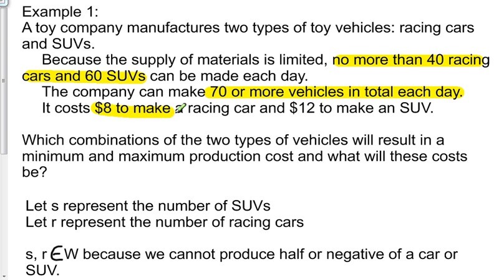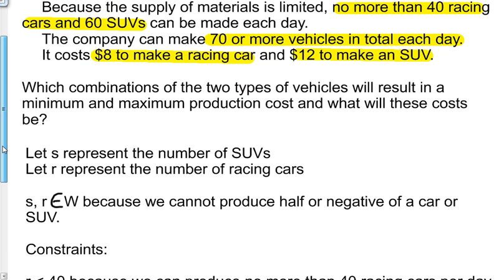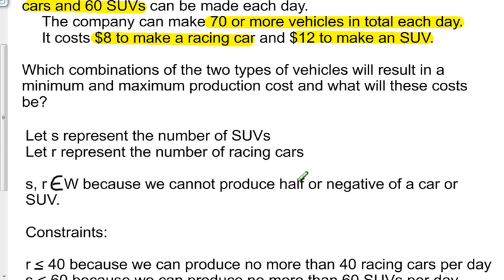It costs $8 to make a racing car and $12 to make an SUV. Which combinations of the two types of vehicles will result in a maximum and minimum production cost and what will these costs be? Let S be the number of SUVs and let R be the number of racing cars. S and R have to be whole numbers because we can't produce half or negative of a car or SUV.